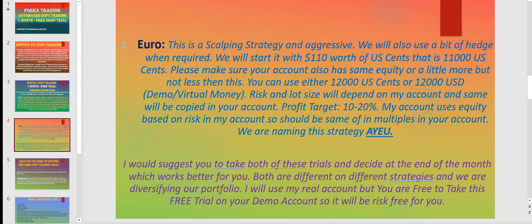The minimum of twelve thousand US cents or twelve thousand USD should be in your account to copy trade for this particular strategy, because the risk I will manage on my account will be based on eleven thousand. It is safer if you keep twelve thousand. We are naming this strategy AYEU and the gold strategy AYGB — just to distinguish between the two strategies, so I can immediately understand which one you're referring to.